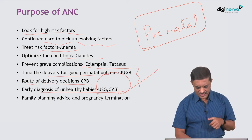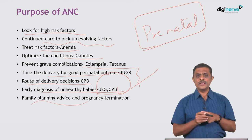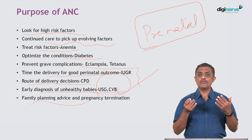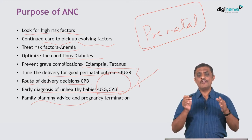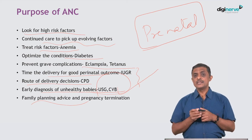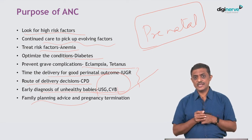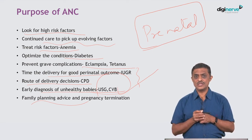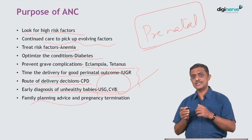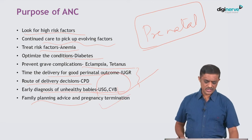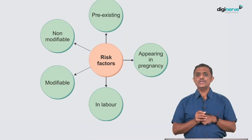Obstetrics has evolved so much that early diagnosis and proper treatment can bring joy to the whole family through a healthy mother and a healthy baby. The antenatal period is also the time to discuss the woman's reproductive goals — how many children she wants, when she wants to limit her family. Sometimes it could be an unwanted or unplanned pregnancy requiring termination, and with continued care from the initial visit, such decisions can be favorably taken.